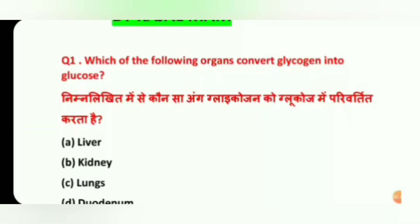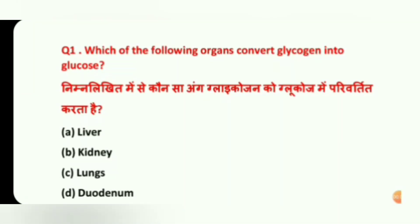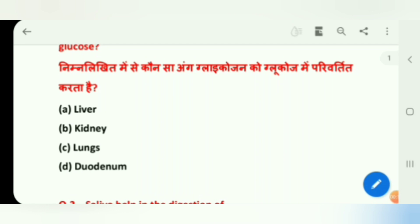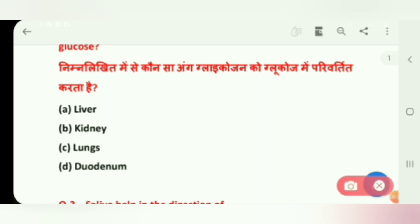Which of the following organs convert glycogen into glucose? Options are: Liver, Kidney, Lungs, and Duodenum. Our answer is Liver.